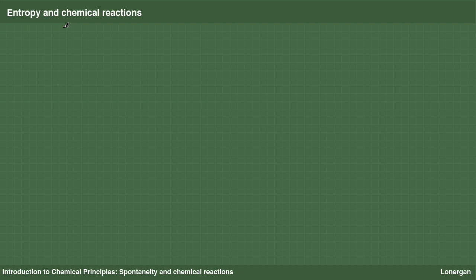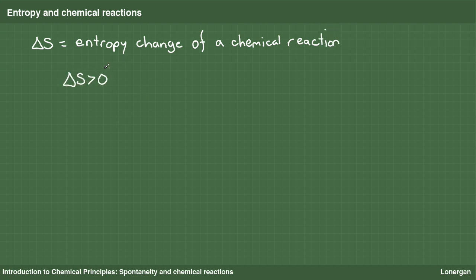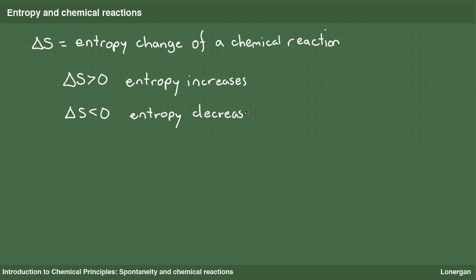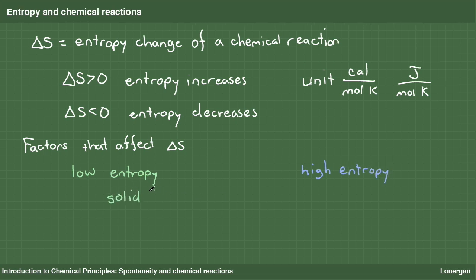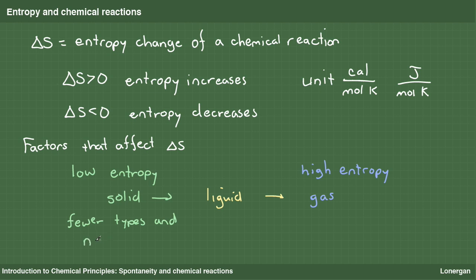Just like the enthalpy change of a chemical reaction, an entropy change for the reaction can also be defined. Entropy is given the symbol S and the entropy change delta S. If ΔS is positive, the entropy of the system increases during the reaction. If ΔS is negative, the entropy of the system decreases. The unit of entropy is an energy unit per mole kelvin, such as calorie per mole kelvin. By recognizing a few factors that contribute to disorder, it is possible to predict whether ΔS will be positive or negative. On a scale of low to high entropy: solids are lower entropy than liquids than gases, and fewer types and numbers of compounds is less entropy than more.